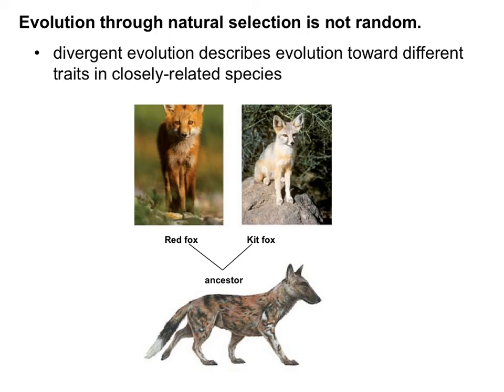Divergent evolution is actually evidence of a common ancestor. To diverge means to split off. We have an original ancestor that diverged into somewhat different characteristics because organisms needed them for their environment, but they share that common ancestor. That is known as divergent evolution. And that's the end of your notes — thanks for hanging out.